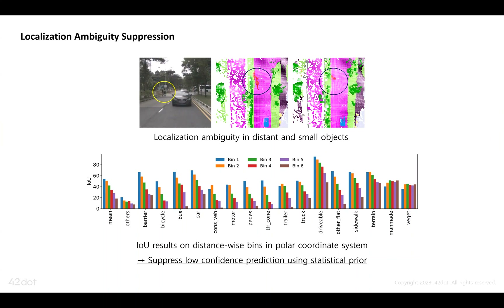In camera systems, we need to localize 3D objects from 2D images. This leads to localization ambiguity in distant and small objects. We propose to suppress low-confidence predictions using a statistical prior.